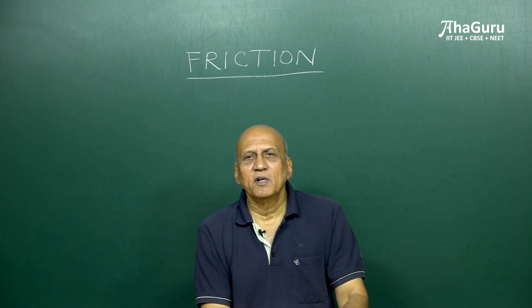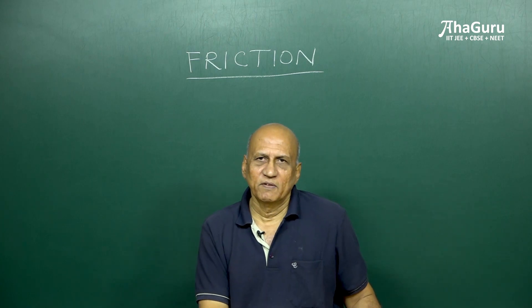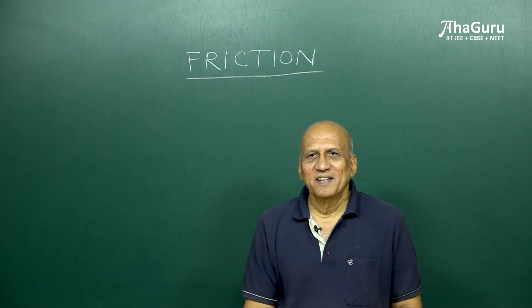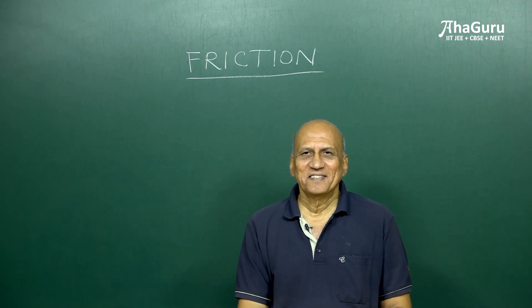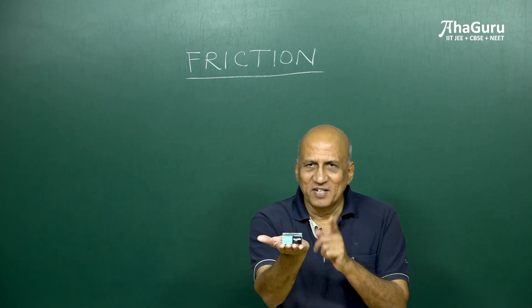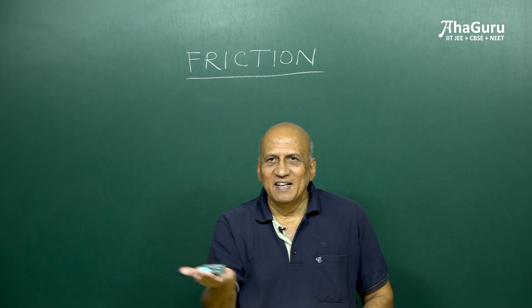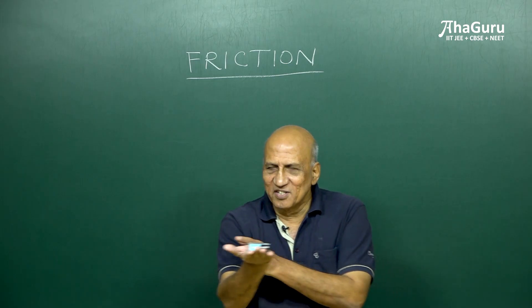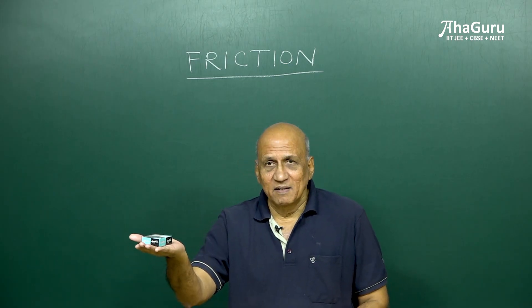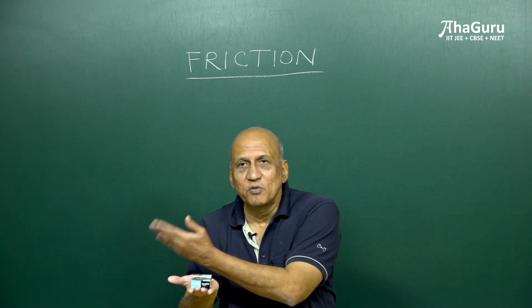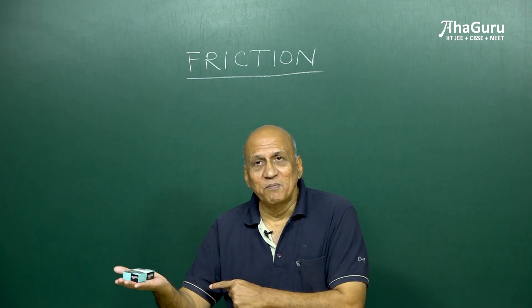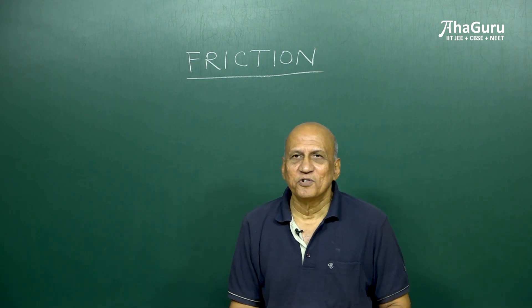If I asked you what is the direction of the frictional force, instinctively most of you will say opposite to the motion. And that is wrong because you can see it is friction that is accelerating the box. And the acceleration is to my right, which means the force of friction must be to my right. In fact, friction is causing the motion. It is not opposing the motion.